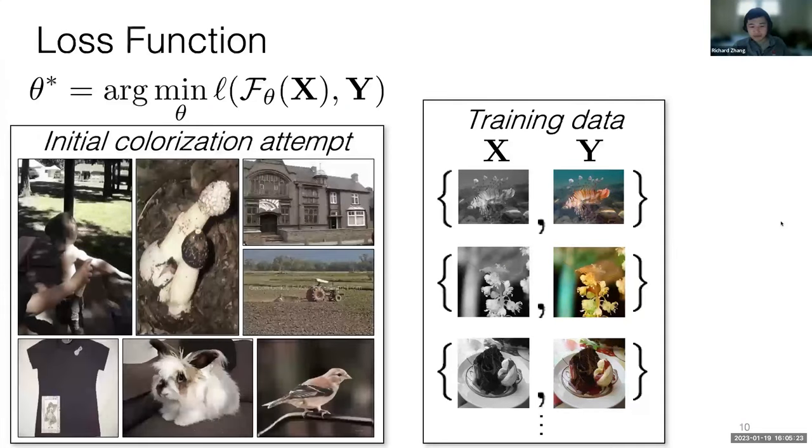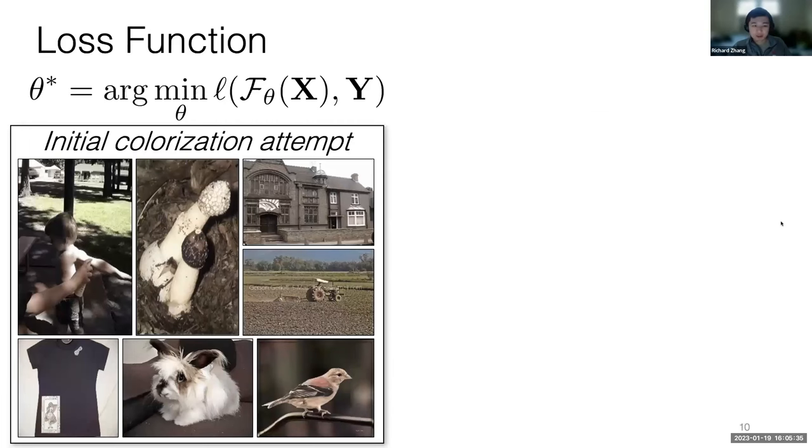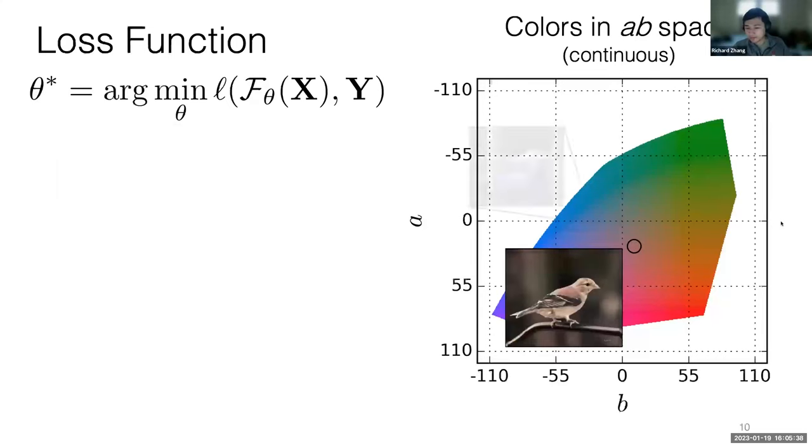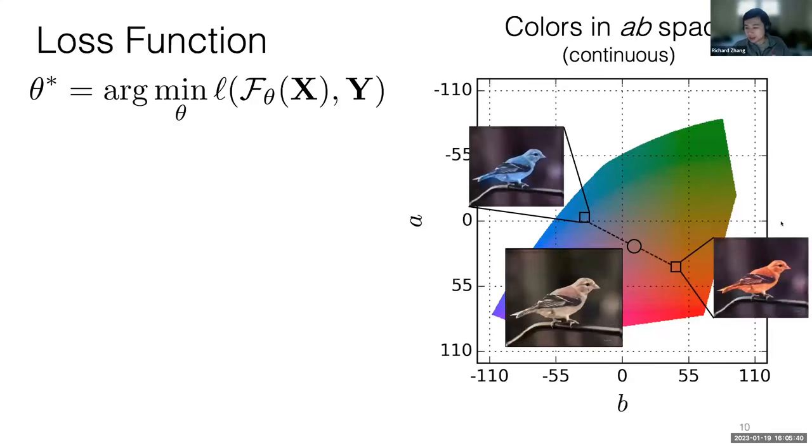What we tried at first was a simple loss function, and this was our initial colorization attempt. These colorization results are honestly not very good. They're kind of dull and desaturated and not realistic. So why is that the case? Well, we can do a little introspection on this bird. This bird could be any number of colors. It could be blue, it could be red. We don't really know. Given that there's a whole bunch of different possibilities, the best thing the network can do with some sort of simple loss function is to average between all of them.